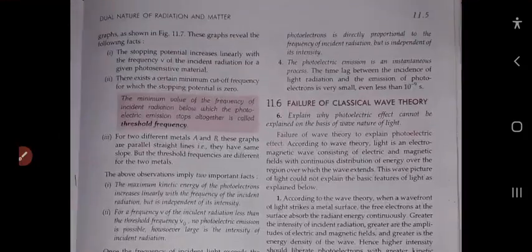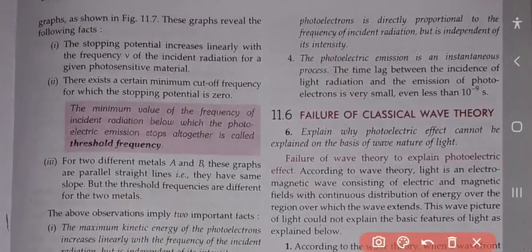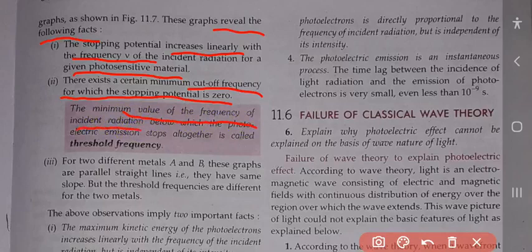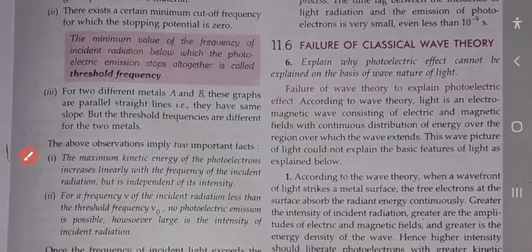This graph reveals the following facts: The stopping potential increases linearly with the frequency of incident radiation for a given photosensitive material. There exists a certain minimum cutoff frequency for which the stopping potential is zero. The minimum value of frequency of incident radiation below which photoelectric emission stops altogether is called threshold frequency.